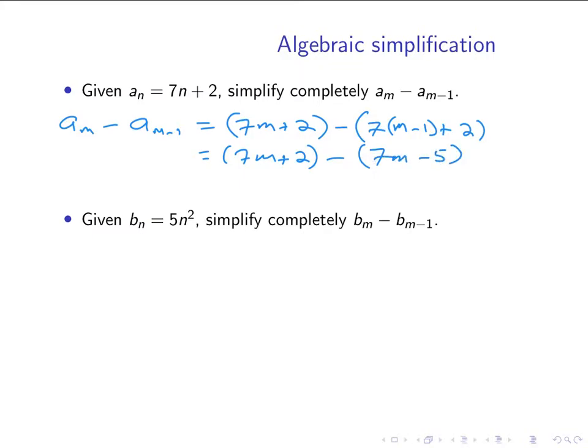And now these 7m's are going to cancel, and I have 2 minus negative 5. So that's the same as 2 plus 5, which is 7. So this expression actually simplifies to have no m's left in it whatsoever.